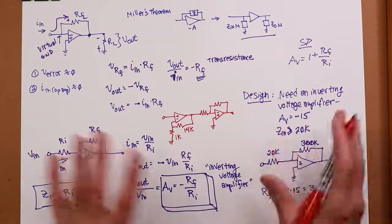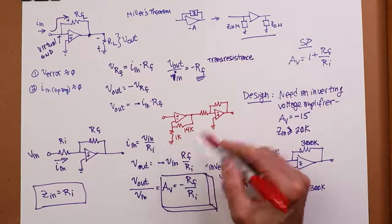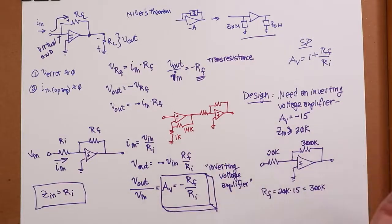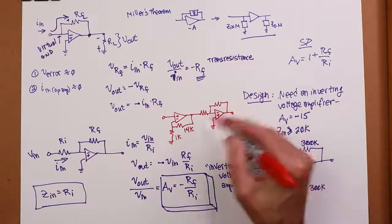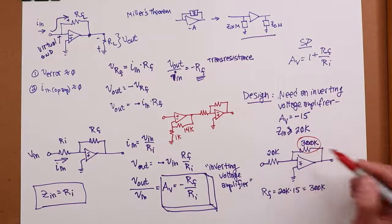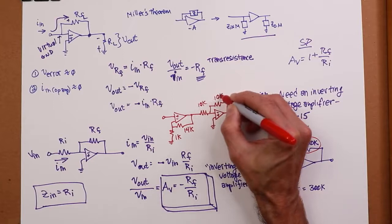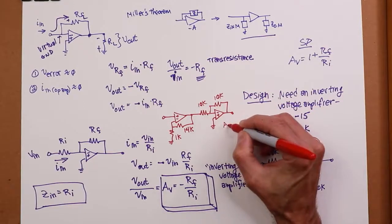And just to use some round numbers so I don't have to grab a calculator, or you don't either, I could get a gain of 15 with a 1K and a 14K. In our ideal world of non-standard resistors, right? 14K over 1K plus 1. Boom, gain of 15.